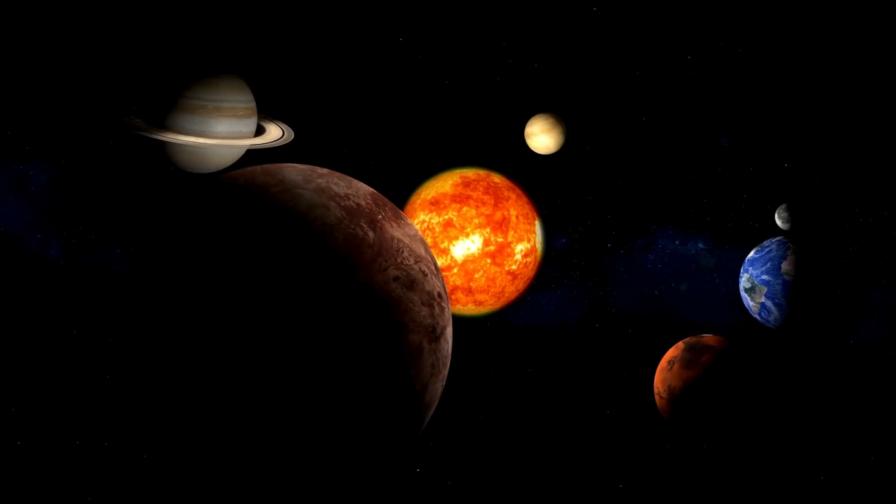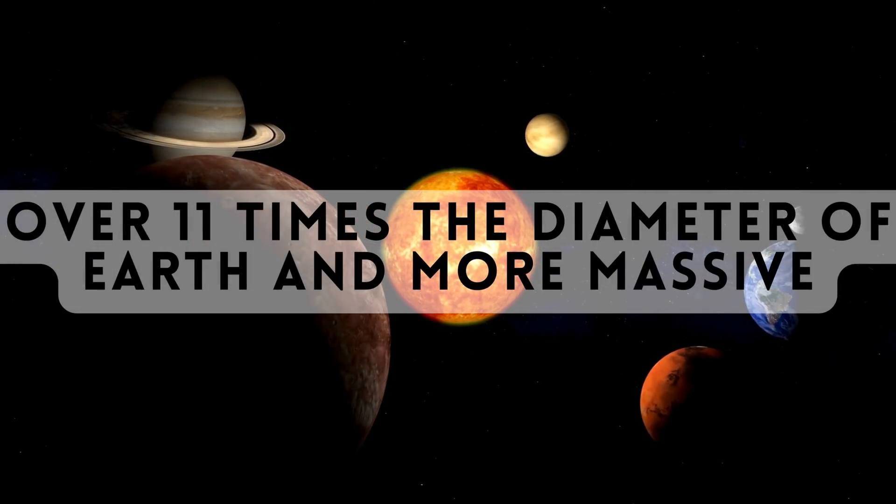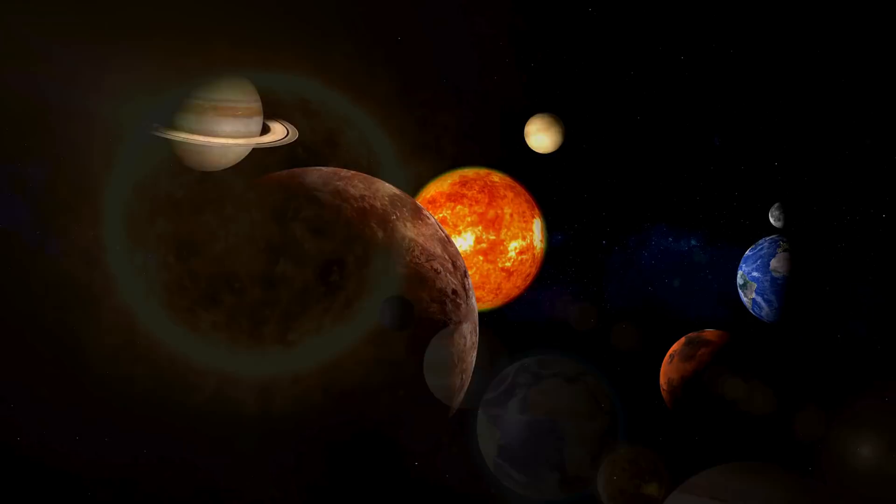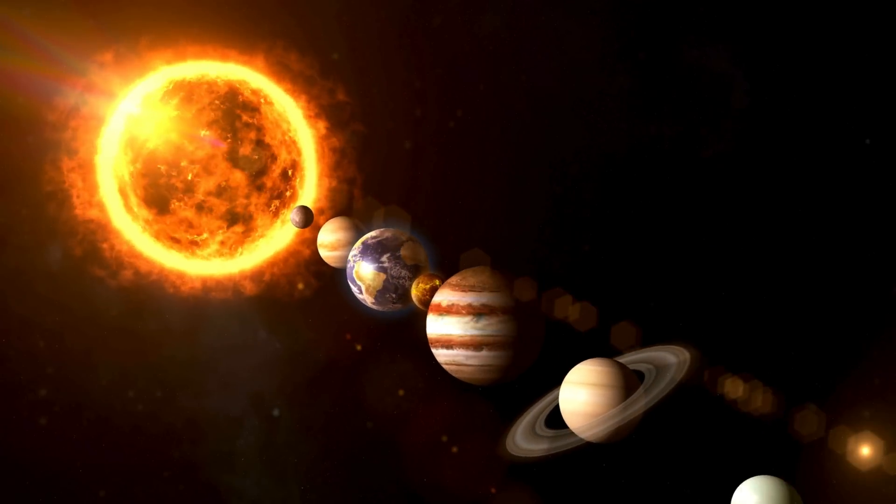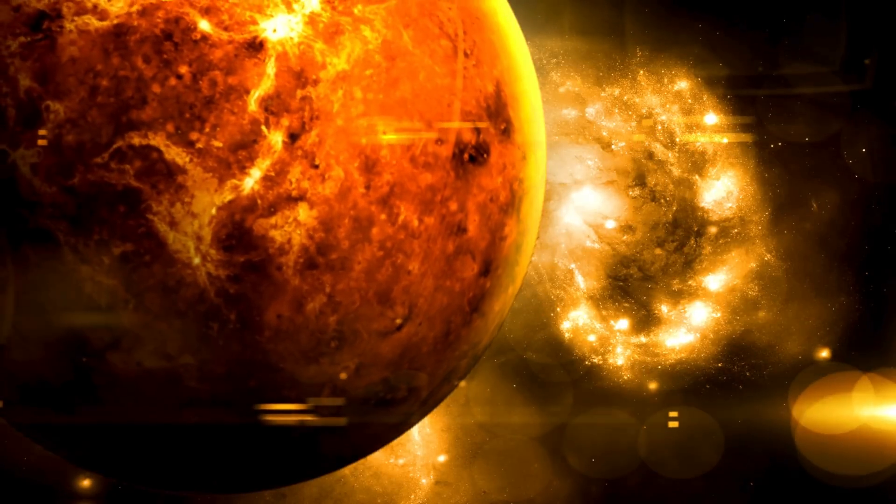To put Jupiter's size into perspective, it's over 11 times the diameter of Earth, and more massive than all the other planets in the solar system combined. Its colossal size is the result of its predominantly gaseous composition.